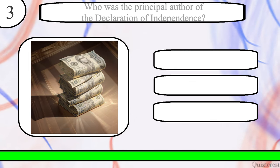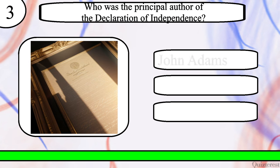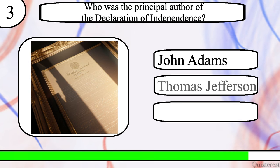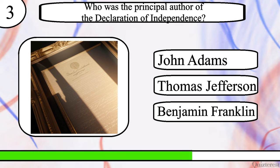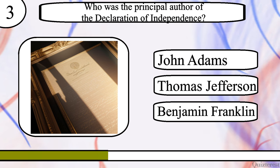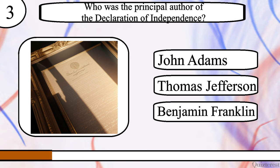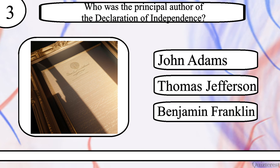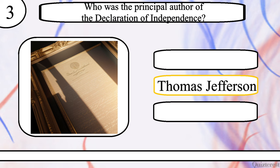Question 3. Who was the principal author of the Declaration of Independence? John Adams, Thomas Jefferson or Benjamin Franklin? The correct answer is Thomas Jefferson.